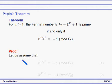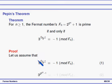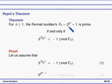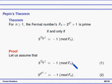Let us assume that 3^((Fn−1)/2) ≡ −1 (mod Fn). Call this equation 1. Substituting Fn = 2^(2^n) + 1, the numerator becomes 2^(2^n) + 1 − 1 = 2^(2^n), and dividing by 2 gives the exponent 2^(2^n − 1). So equation 2 is: 3^(2^(2^n − 1)) ≡ −1 (mod Fn).